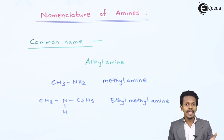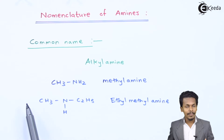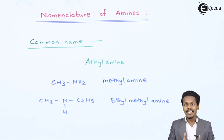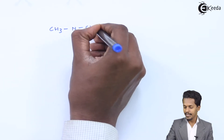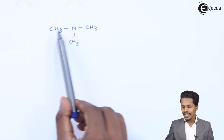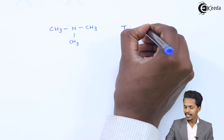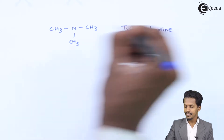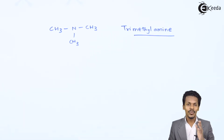This is a very simple procedure to give a common name to an amine. For example, if there are two methyl groups attached, then suffixes like di or tri would be used. Suppose we have three methyl groups attached to nitrogen — that is CH3, CH3, CH3 — then the name would be trimethylamine. So ultimately the name ends with alkyl amine, and that is the procedure for giving a common name.